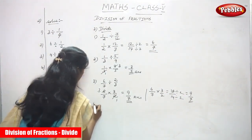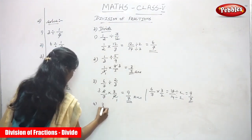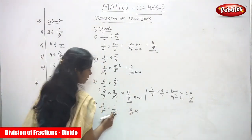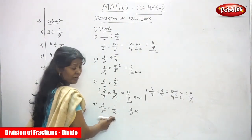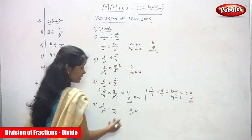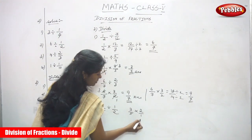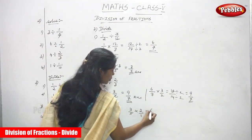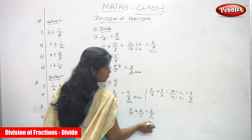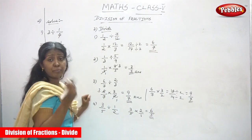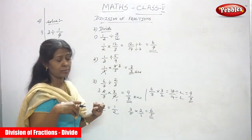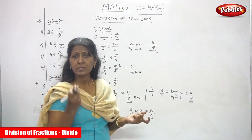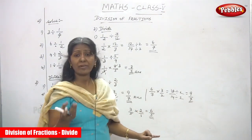Last sum: 3/5 divided by 1/2. Write 3/5 as the dividend. Take the reciprocal of the divisor 1/2 to get 2/1. Multiply: 3 × 2 = 6 and 5 × 1 = 5, giving 6/5. This is an improper fraction. You cannot simplify it or reduce it to a lower term.